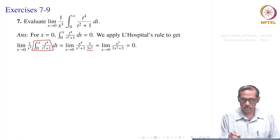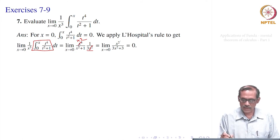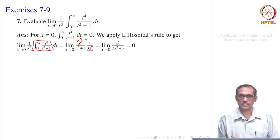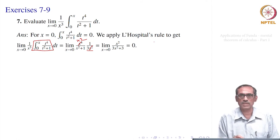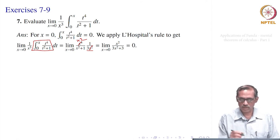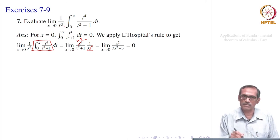That is why you get this limit by L'Hôpital. So, the limit as x goes to 0 of x fourth divided by (x squared plus 1) times 3x squared: x squared cancels, so it is really x squared divided by 3x squared plus 3. That limit is straightforward 0, because the numerator goes to 0 and the denominator goes to 3. So, there can be simpler ways; we have to find out which one becomes simpler. Sometimes the other method — evaluating the integral first and then taking the limit — can be simpler.